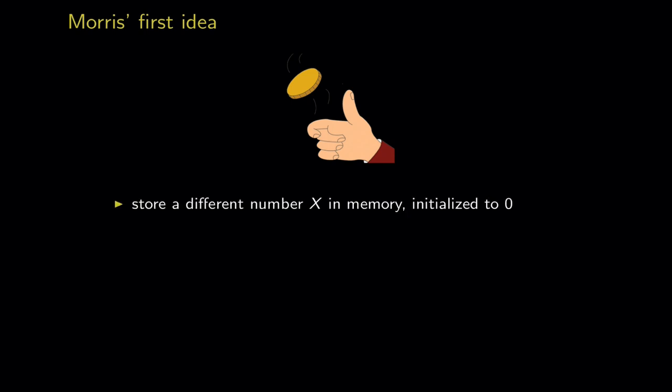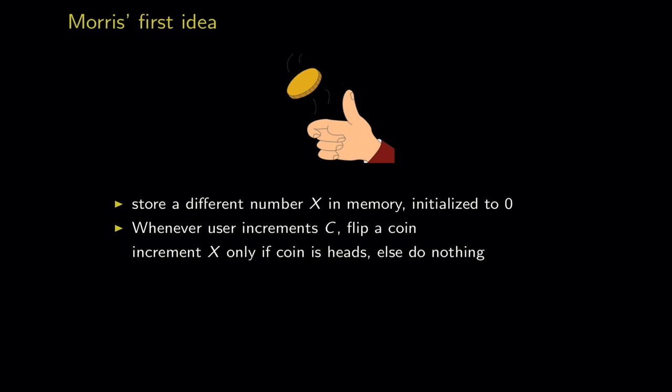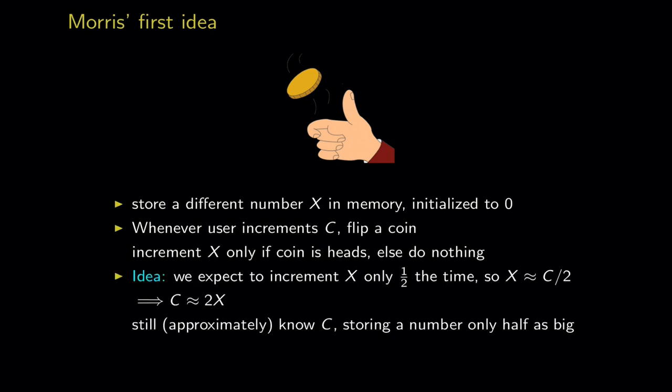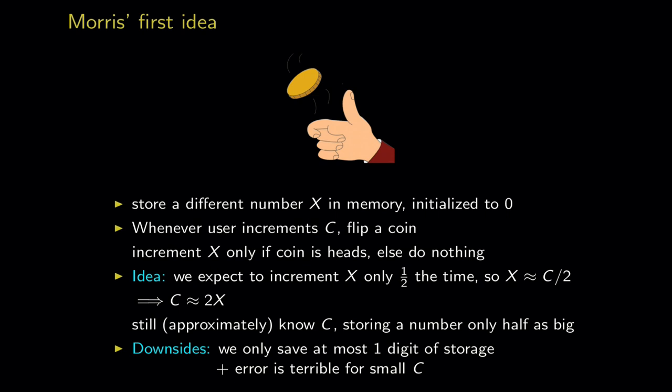Whenever someone says increment, I flip a fair coin. If it comes up heads I increment x; if tails I do nothing. The idea is I only expect to increment x half the time, so x will roughly be c/2. If someone asks what c is, I report 2x. I'm storing a number half as big, saving one digit. But there are two downsides: I only saved one digit, and for small counter values there's too much variance.